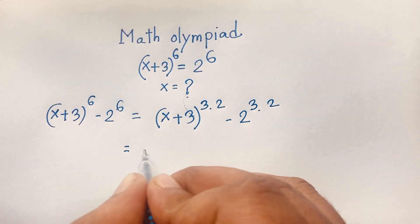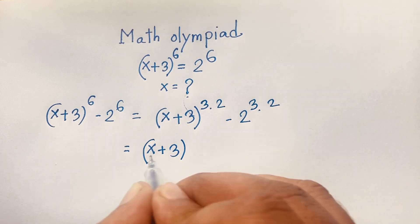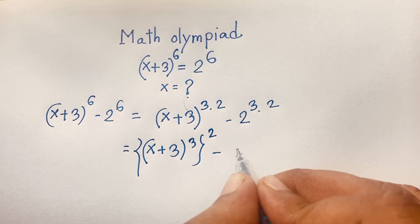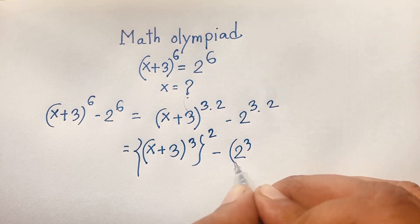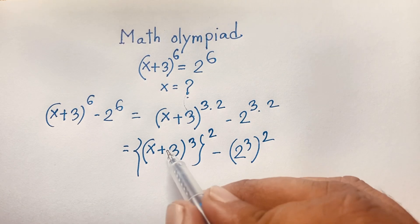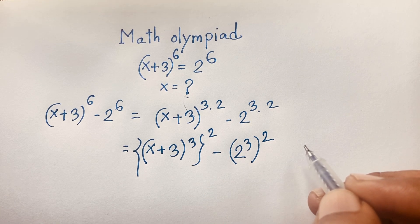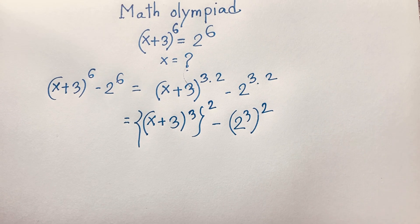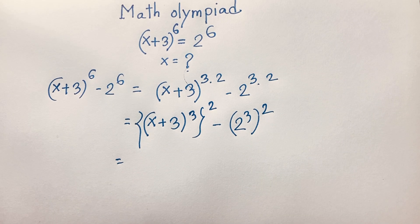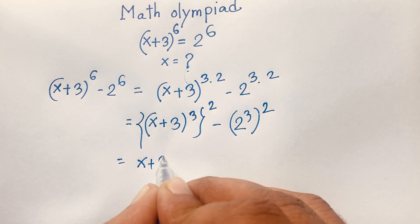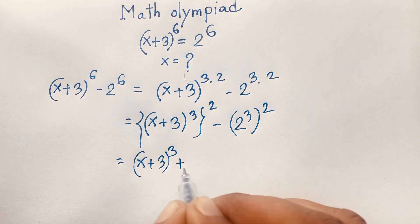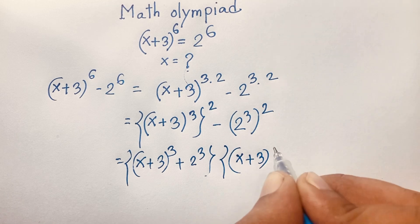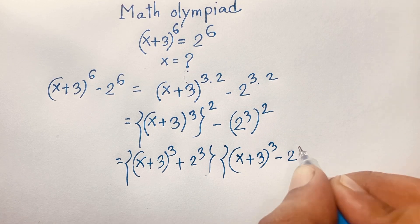Now I can see easily: here is (x+3) whole to the power 3 in a bracket, and I take these two inside the bracket minus 2 to the power 3. At this moment, you can see easily — if you think this is a and this is b — so it is a² minus b². One of the laws: a² minus b² equals (a+b)(a−b). According to this law, I can see this expression: it will be (a+b)(a−b), so (x+3)³ as a, plus 2³ as b, times (x+3)³ minus 2³.